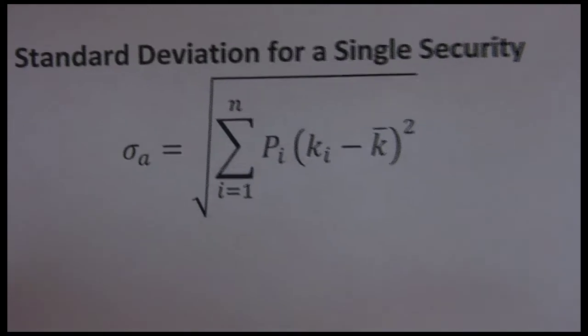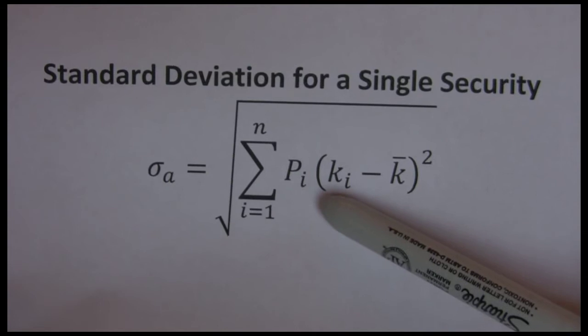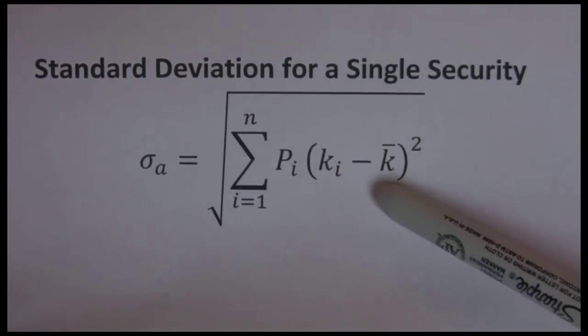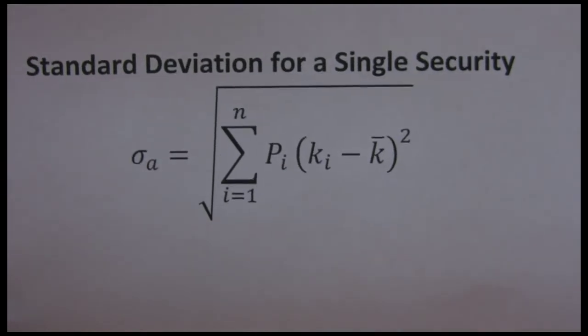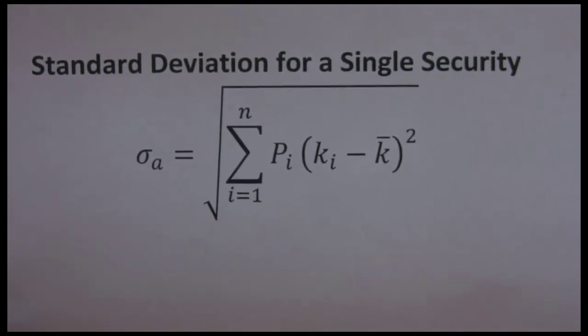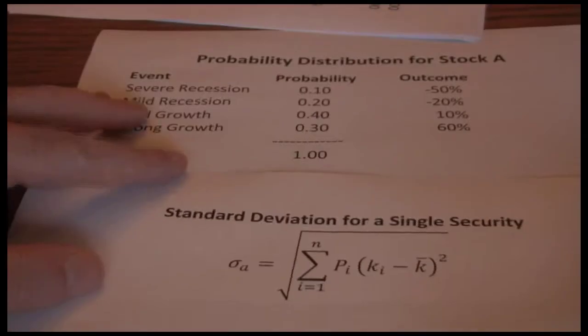What we want to do is for each possible outcome, we want to take the return for that outcome minus the average or expected return squared, times the probability, sum those up for all possible scenarios, and then take the square root. Again, let's go through the example to illustrate this.